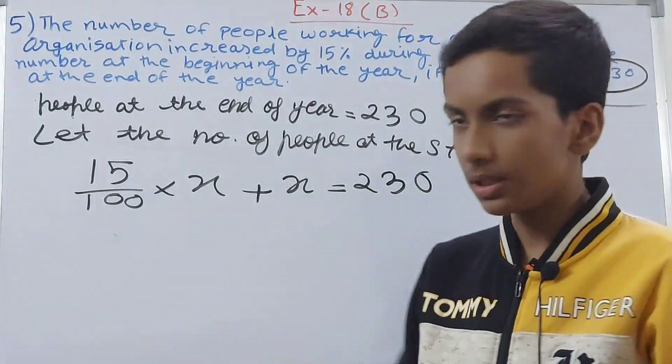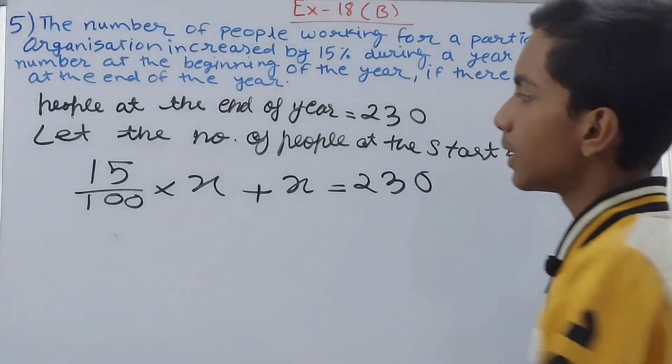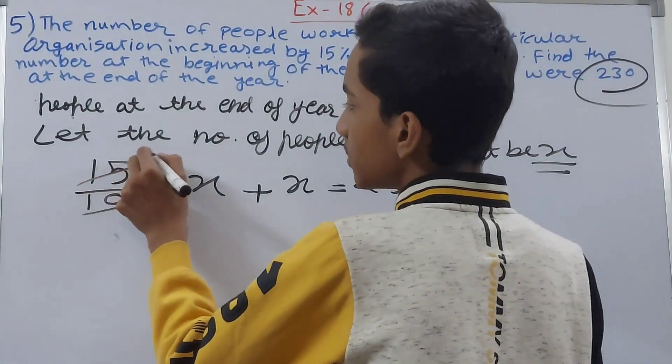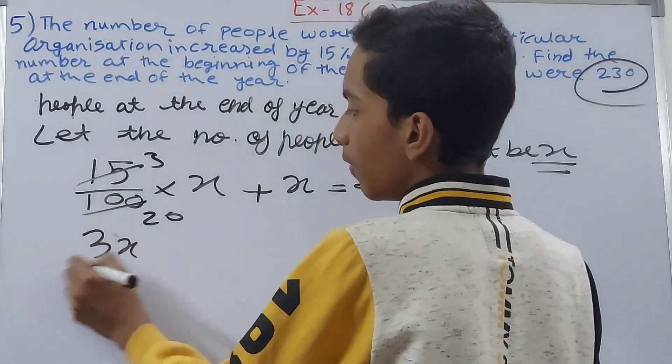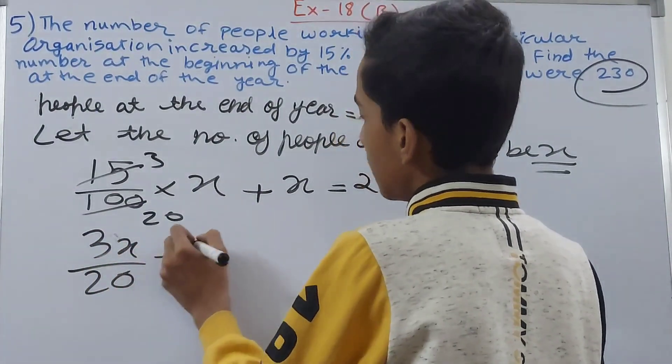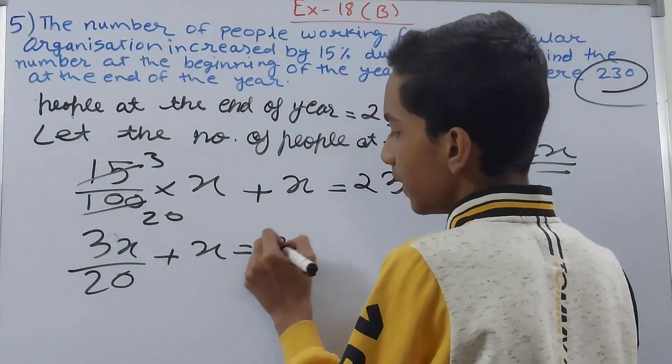So this gives you - let's see - this becomes 3 and this one 20, so 3x upon 20 plus x equals to 230.